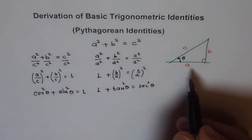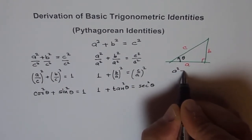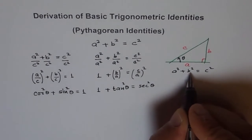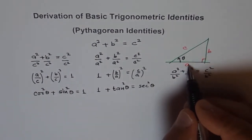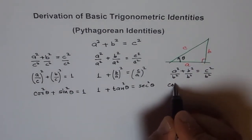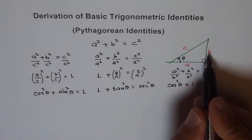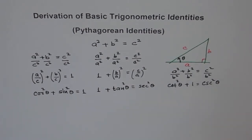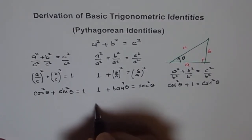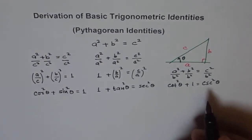Similarly, we can derive the third one. This time we divide by B squared. So we have A squared plus B squared equals C squared, dividing everything by B squared. A over B is the reciprocal of tan, which is cotangent, so we get cot squared theta. Plus this gives 1. And C over B is the reciprocal of sin theta, which is cosecant theta. So we get cot squared theta plus 1 equals cosecant squared theta. So we get three basic identities from here. You see how simple the proof is!